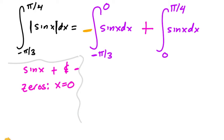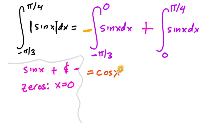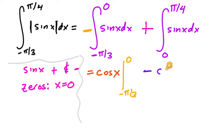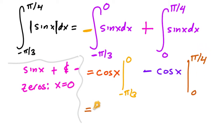After we do that, we find the antiderivative like usual. The antiderivative of sine is negative cosine, and multiplied by that negative outside gives us positive cosine of x, evaluated from negative pi over three to zero. Then minus cosine of x — since the antiderivative is negative cosine — evaluated from zero to pi over four.